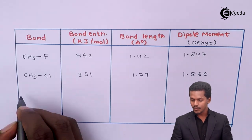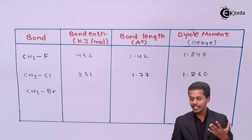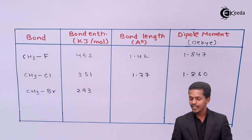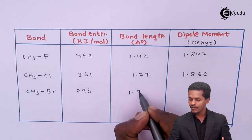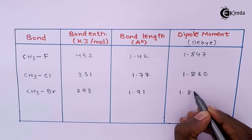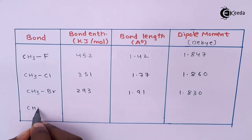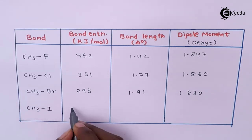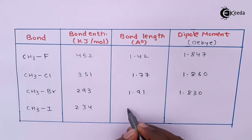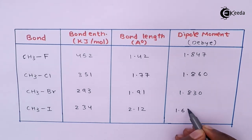For methyl bromide (CH₃Br), the bond enthalpy is 293 kJ/mol, the bond length is 1.91 Å, and the dipole moment is 1.830 D. For methyl iodide (CH₃I), the energy required to break the bond is 234 kJ/mol, the bond length is 2.12 Å, and the dipole moment is 1.636 D.